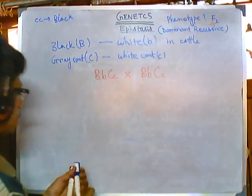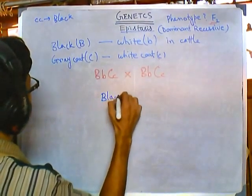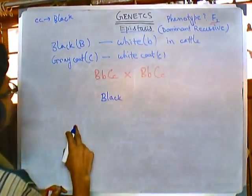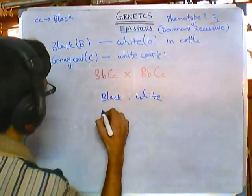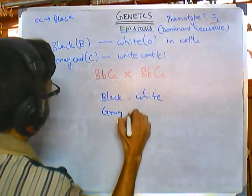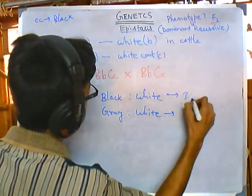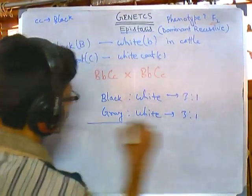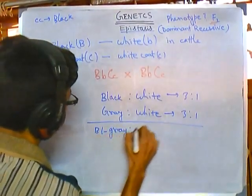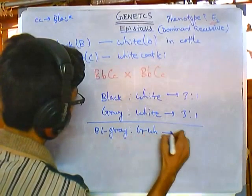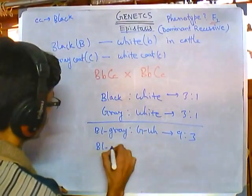If we do this cross and get the results: black is to white then gray is to white. The ratios are always 3 is to 1 because again it is a heterozygous cross. So we are having black, gray, gray, white — giving 9 is to 3, then again black, white, white, white.